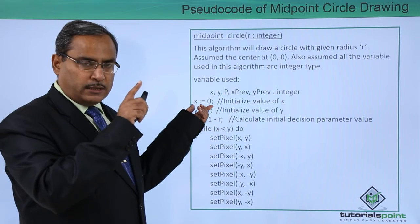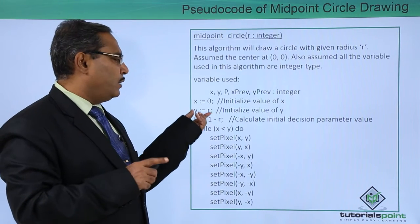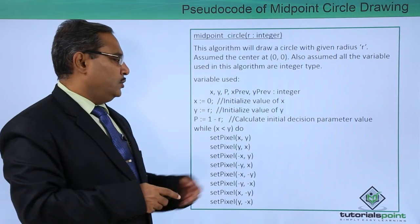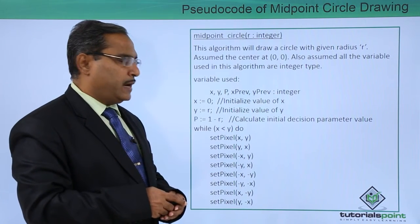That means the topmost point of the circle on the y-axis. So y equals R, x equals 0, and p equals 1 minus R. This calculates the initial decision parameter value.